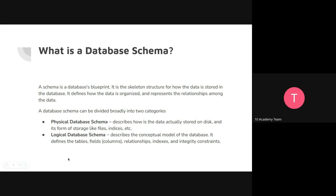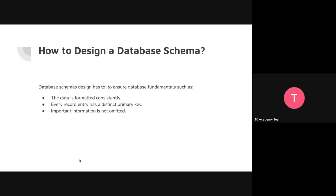In a relational database, the logical schema decides: what your tables will be, what your columns are, what the relationships are, and what things like primary keys, foreign keys, and integrity constraints are defined. That's what you decide in the logical database schema.